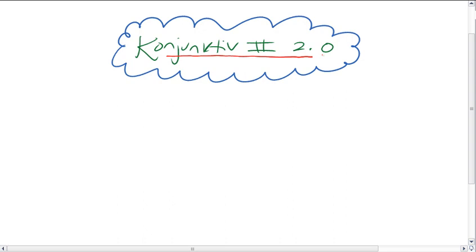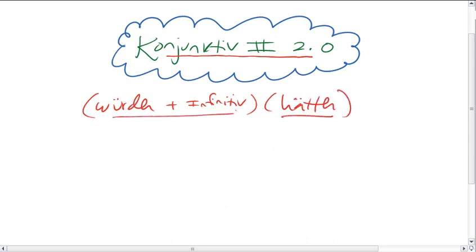And you guys all know the Konjunktiv 2 from würden plus infinitiv and hätten. So would have and then would and then you combine that with any verb. But today we're going to be expanding the way that we use Konjunktiv 2 just to talk about more things.